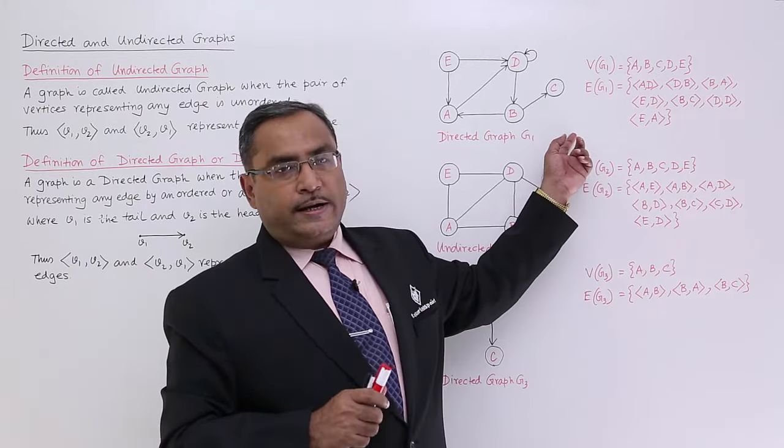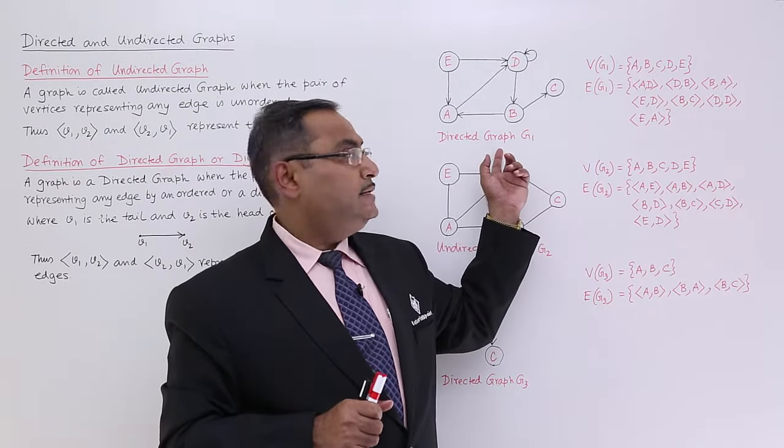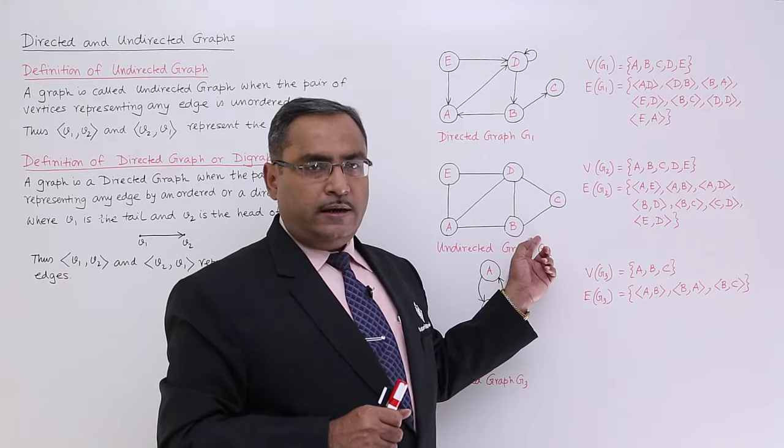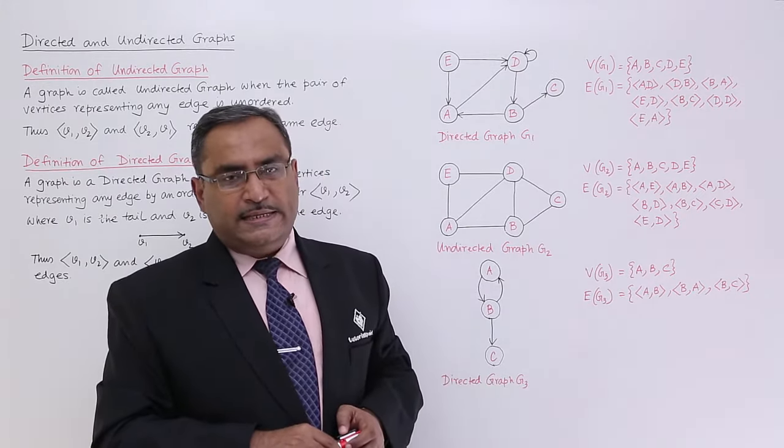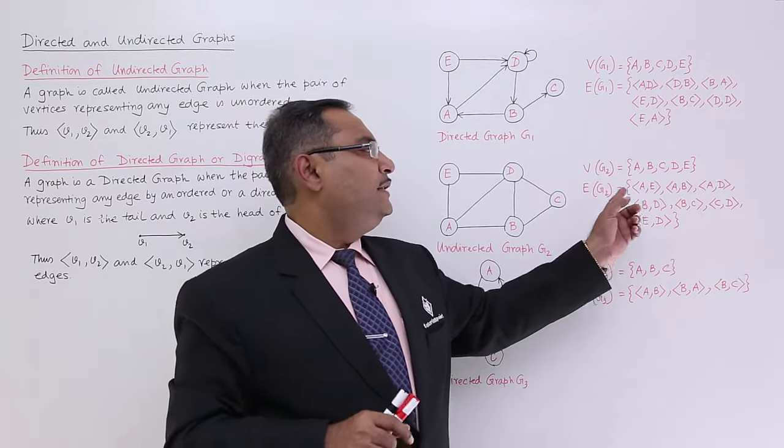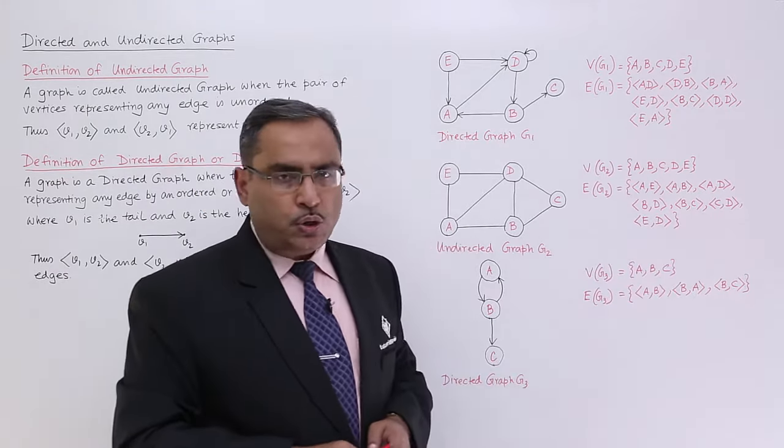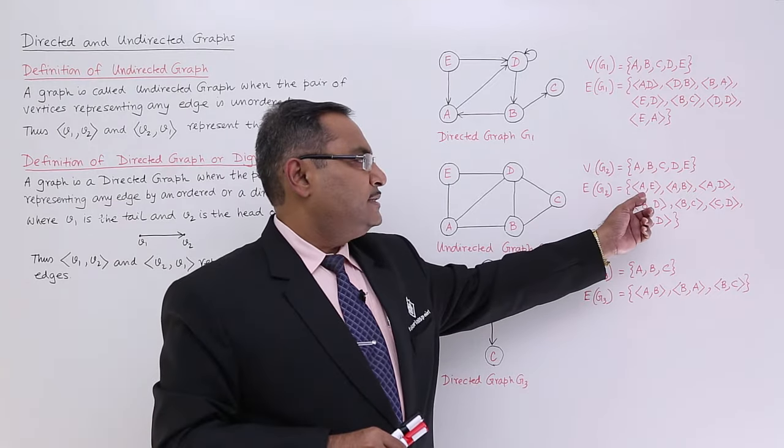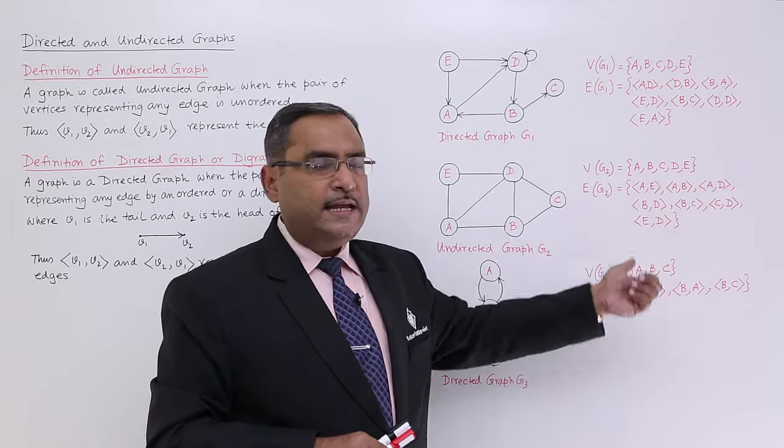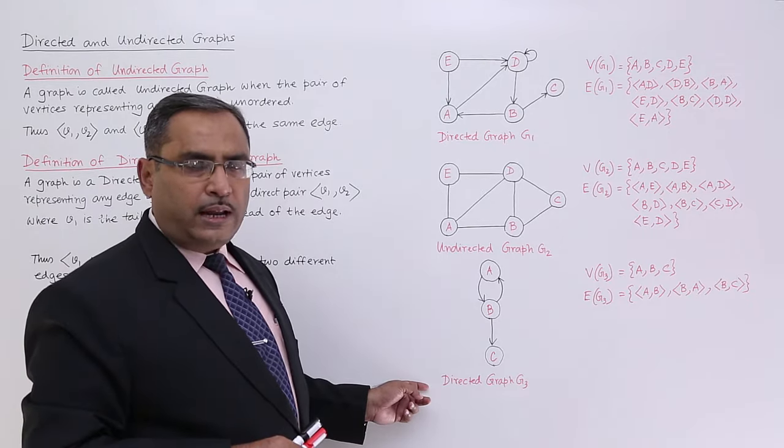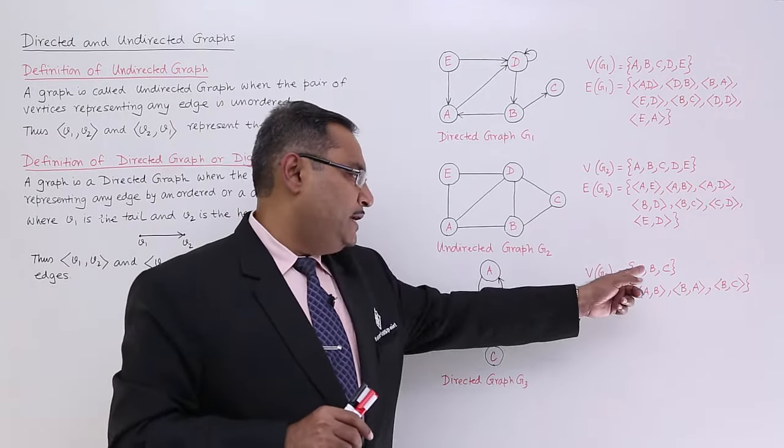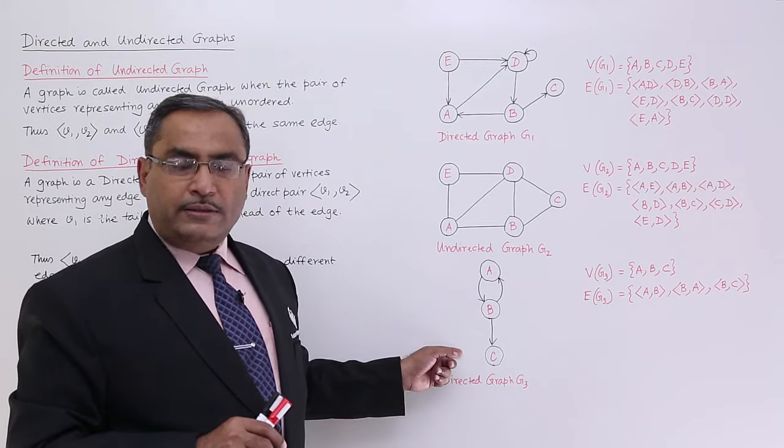So now this is the directed graph as we are having the directed edges. Now this is the undirected graph and here we are having the set of vertices as A, B, C, D, and E and these are the respective edges we have shown, and obviously in this case AE can also be written as EA. And this is another directed graph where we are having three vertices A, B, and C and here we are having three edges.